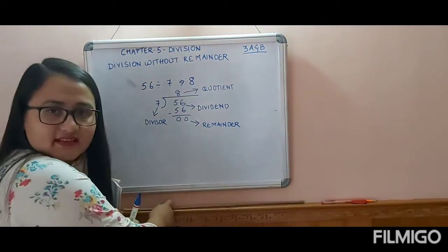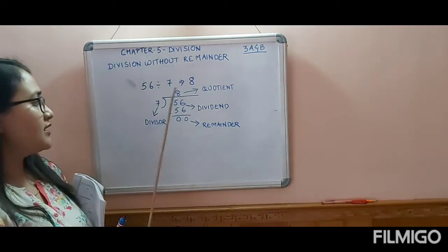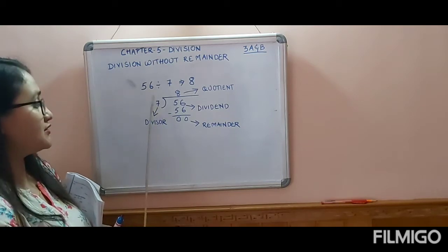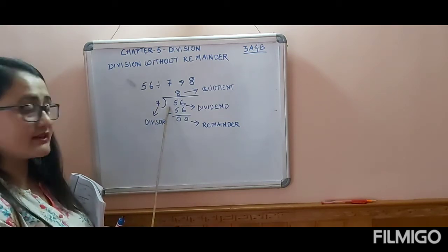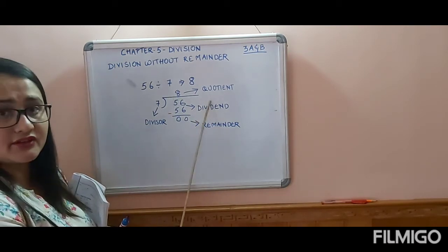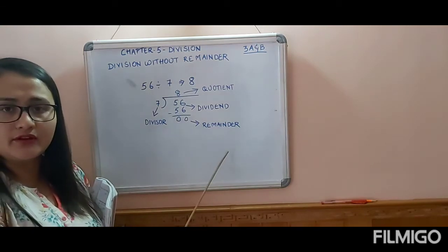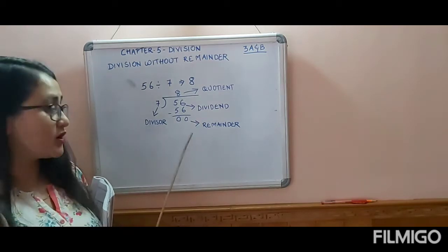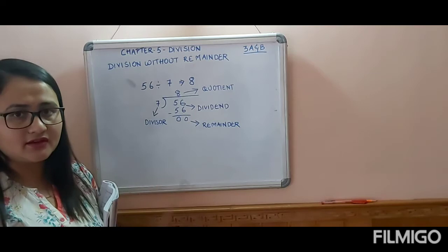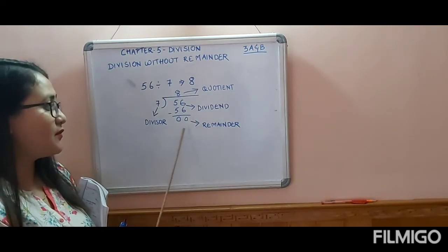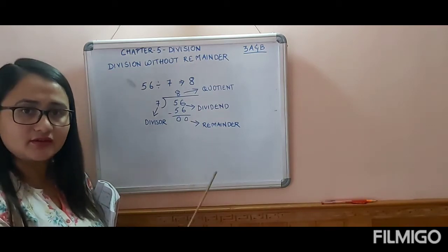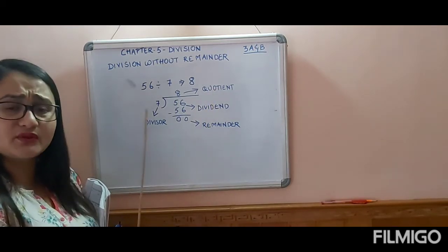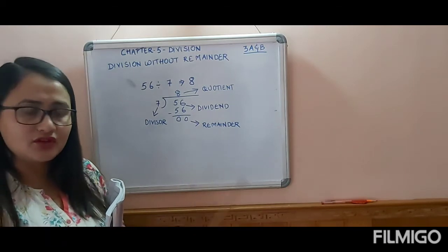So these are the four basic terms you should know in division: the number by which we divide is the divisor; the number which we divide is the dividend; the answer we get is the quotient; and whatever remains is the remainder. Here the remainder is 0 — 0 cannot be counted as a remainder, but whatever number is left over is known as the remainder.